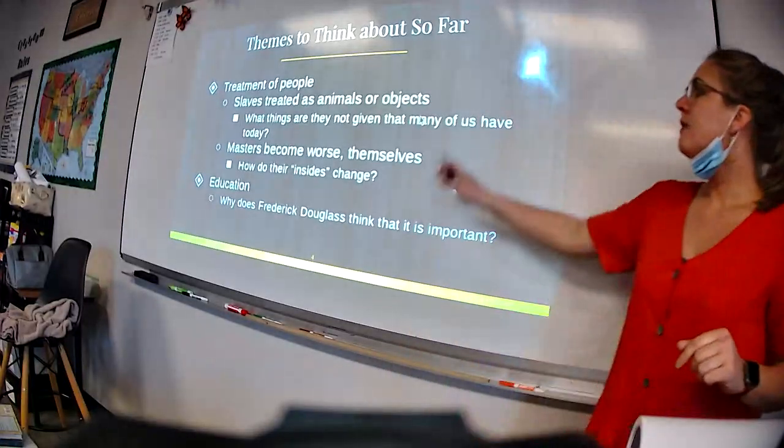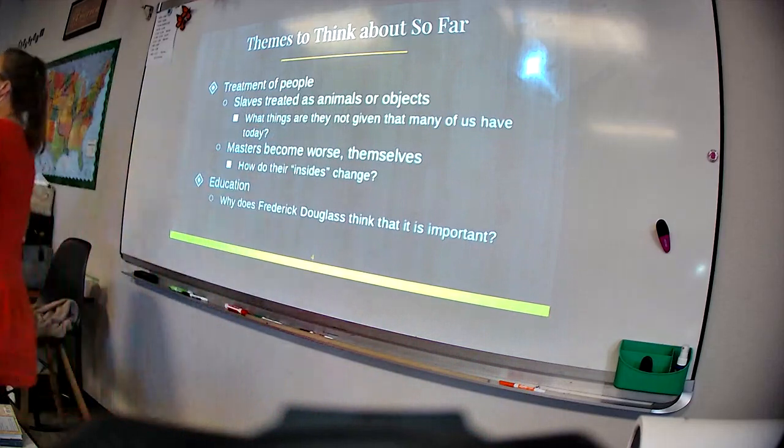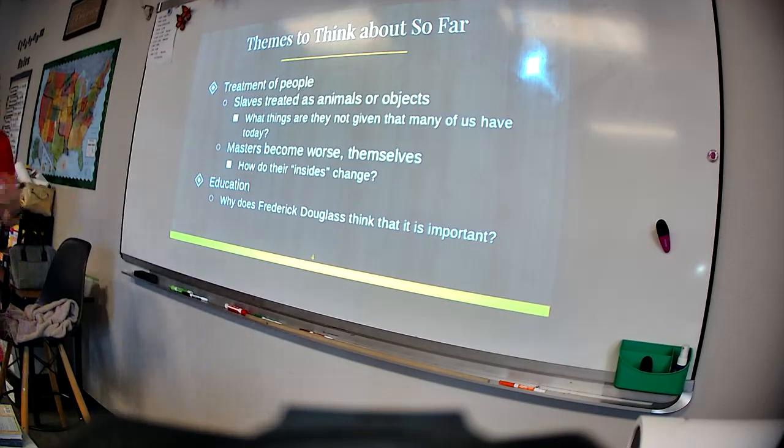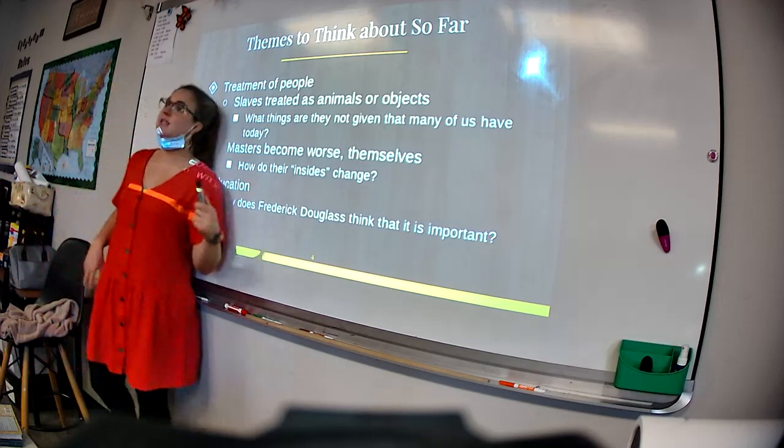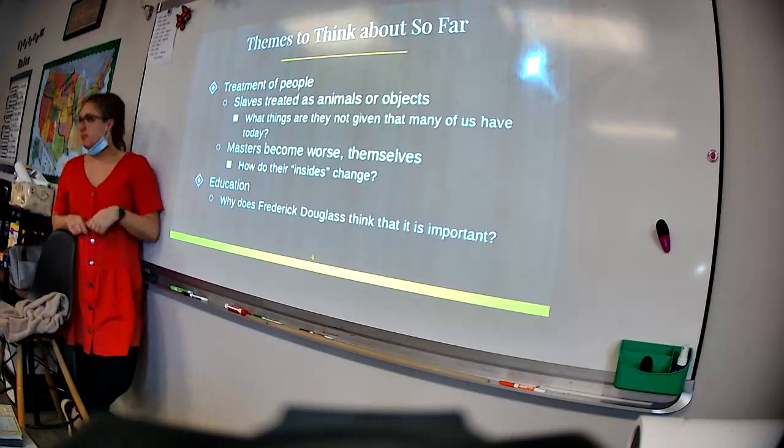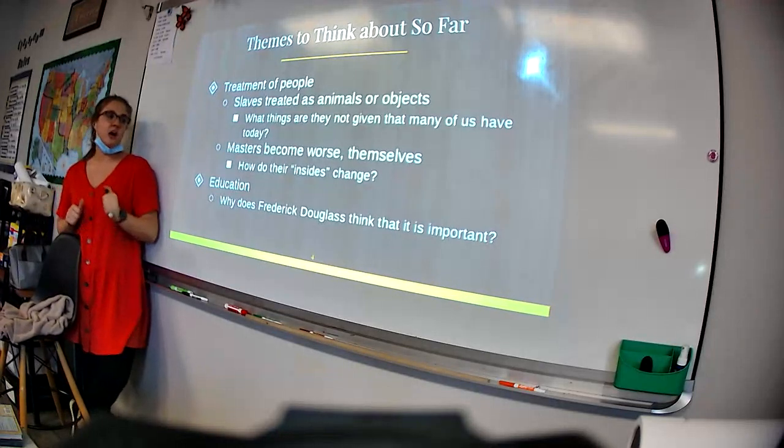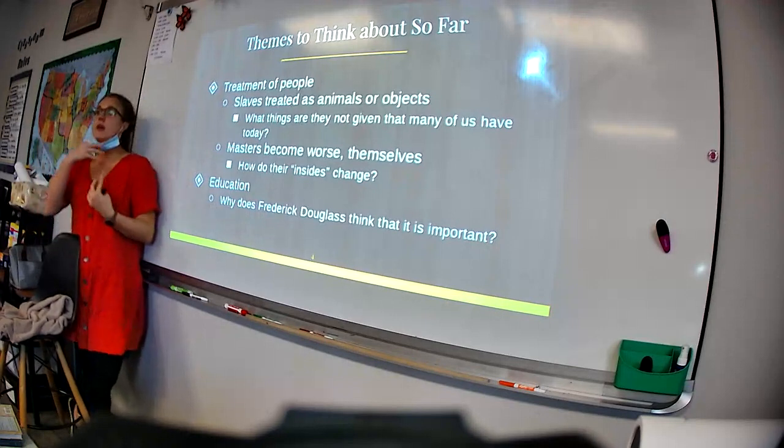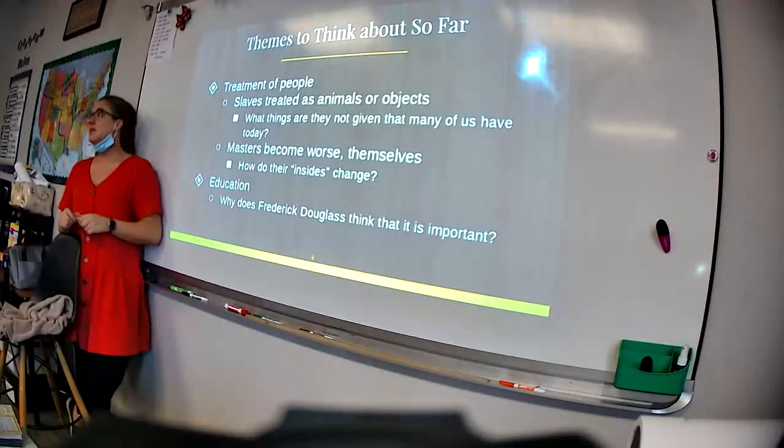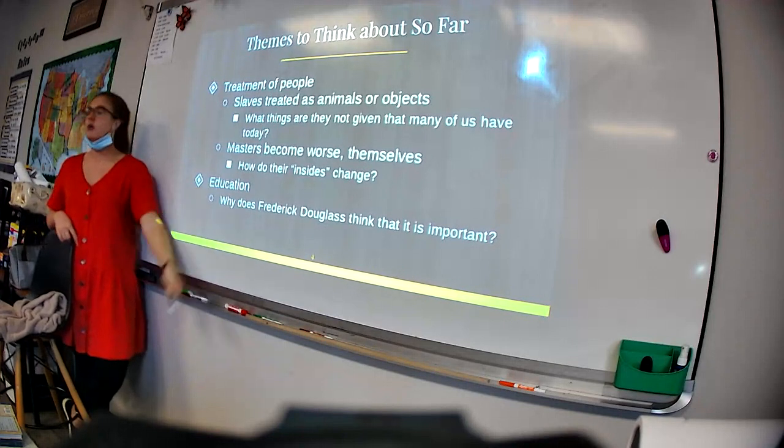A couple of things to think about. The treatment of people. In this story, I want you to think, are the people being treated as people? Or are they being treated as animals? And you'll see that the way that they treated these slaves, as far as chaining them together, selling them at the auction, things like that, they really were treated more like animals or objects than people with true feelings. What things are they not given that many of us have today? And then I also want you to see, how do the masters become worse themselves? How do their insides change? Meaning, their heart, their spirit. You'll see that the older the slave master is, the longer he has had control over slaves, typically the more evil he is. So how does their inside person, their soul, or their heart change the more they're in control of these slaves?